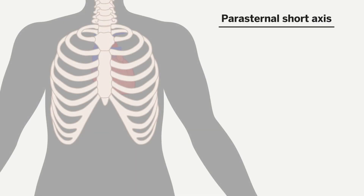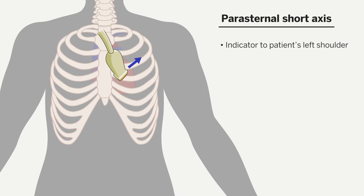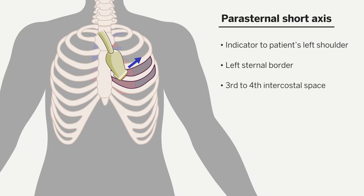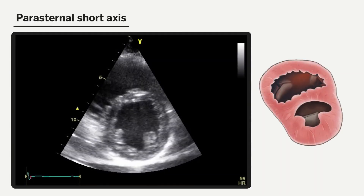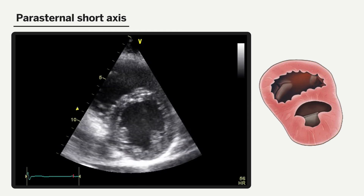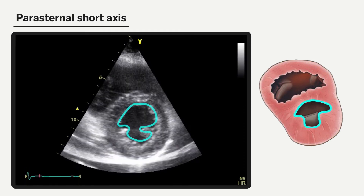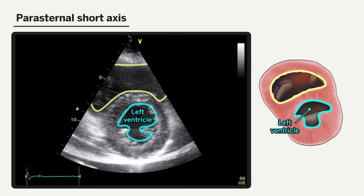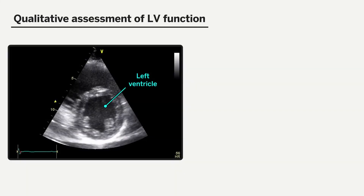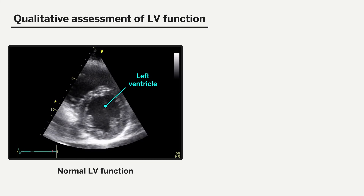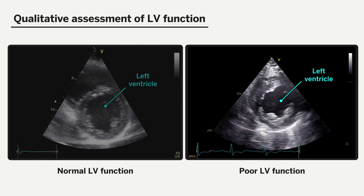Our next view is the parasternal short axis. To obtain this view, we rotate the probe from the parasternal long axis position so the indicator is now facing towards the patient's left shoulder, remaining left of the sternum in the third or fourth intercostal space. Our standard view should show the round or donut-shaped left ventricle along with the crescent-shaped right ventricle wrapping around it. This view is useful for qualitatively assessing left ventricular function by eyeballing contractility, with good function on the left compared to poor function in the video loop on the right.